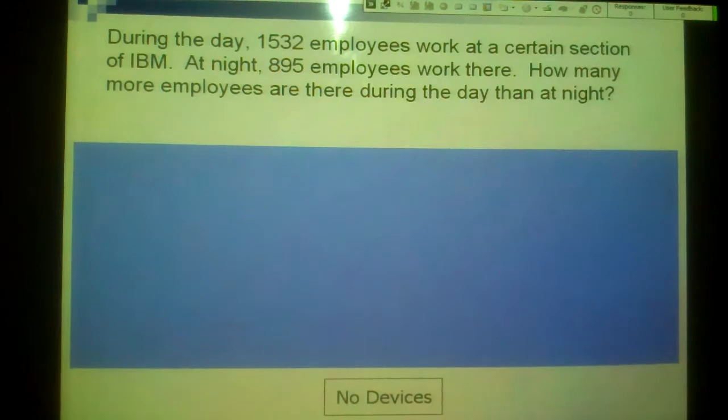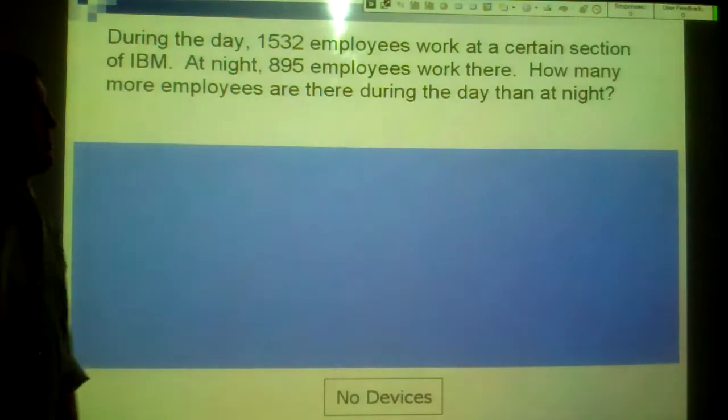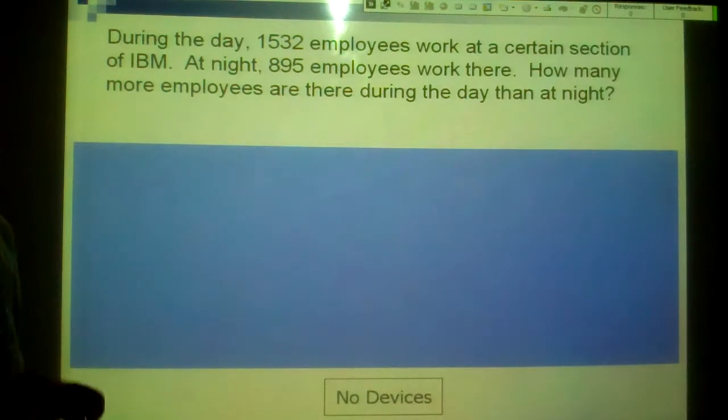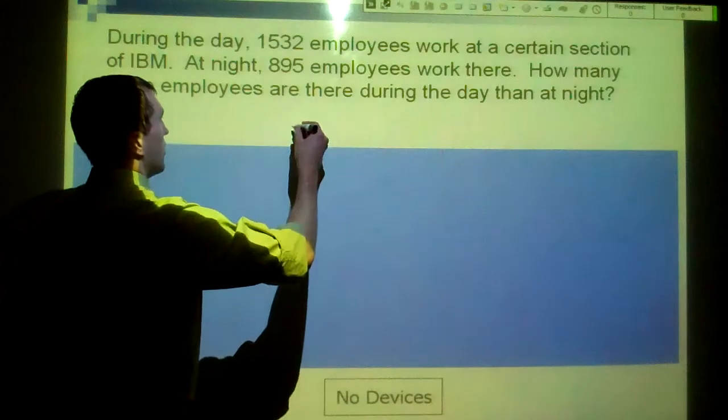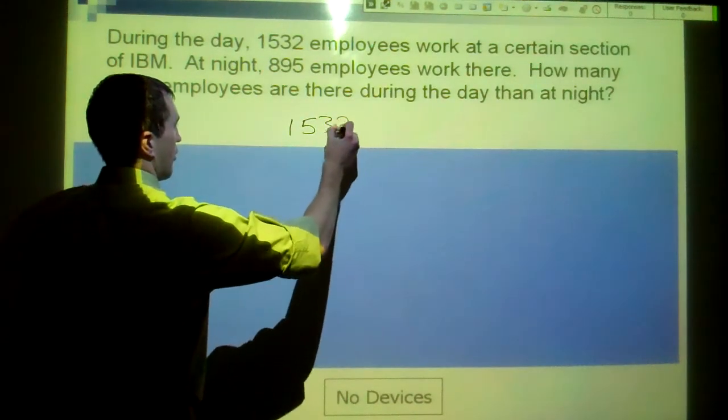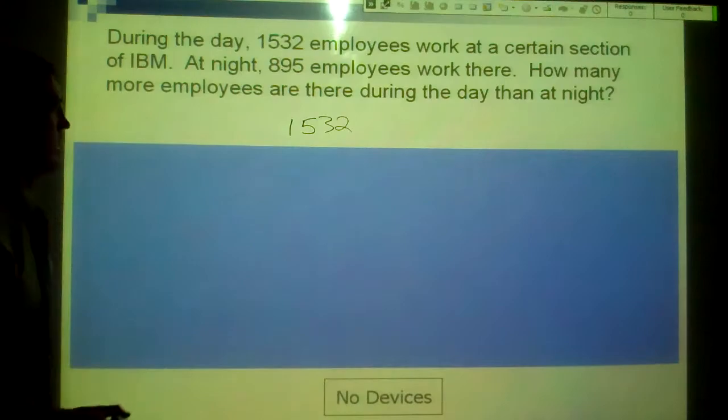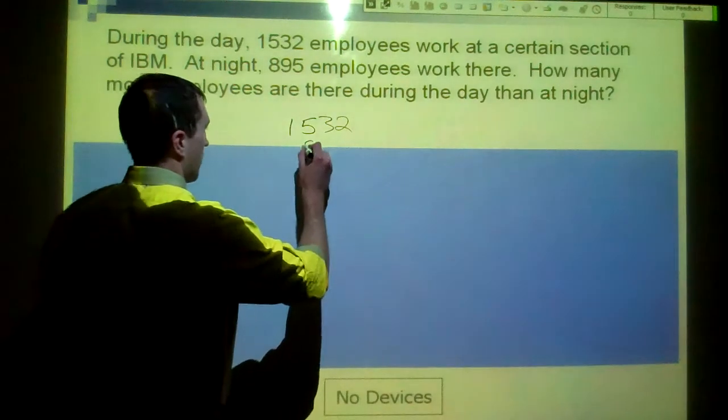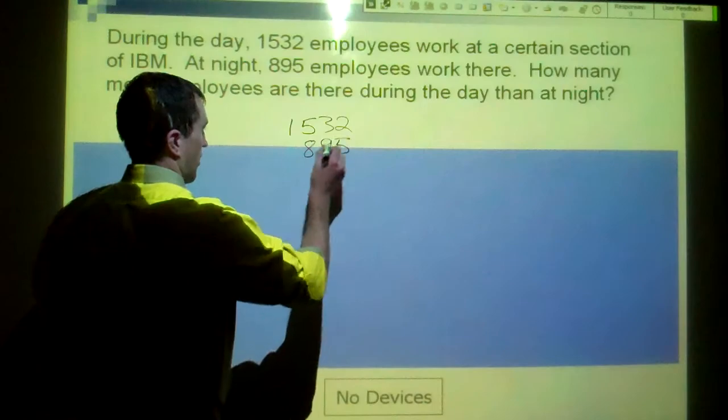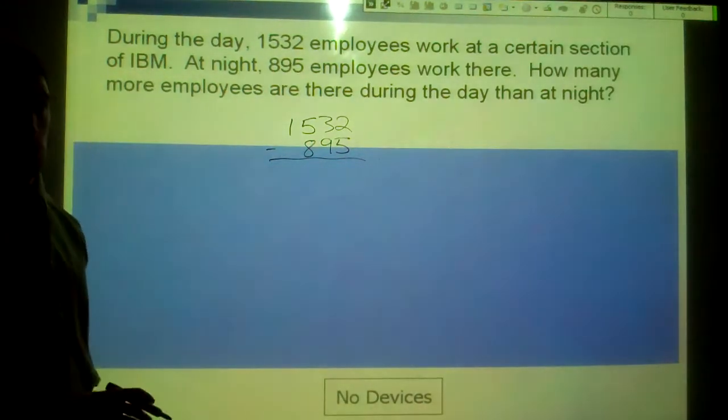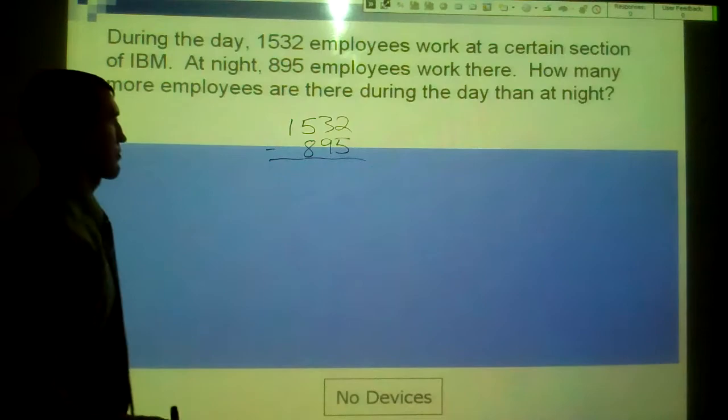Let's look at this example quick. During the day, 1,532 employees work at a certain section of IBM. At night, 895 employees work there. How many more employees are there during the day than at night? There's that key phrase there, how many more. If we're looking for how many more, we're going to be subtracting. We're going to go, there are 1,532 employees at the day and then at night, 895. If we do this subtraction, we should see how many more people work during the day than at night.